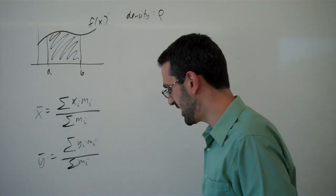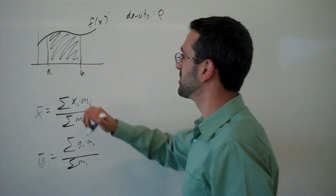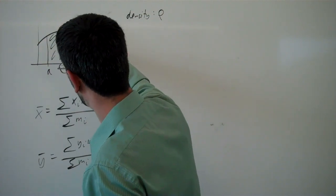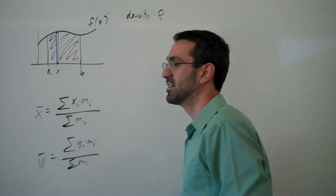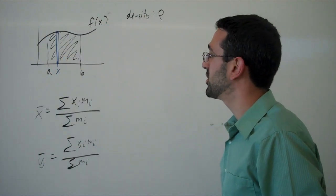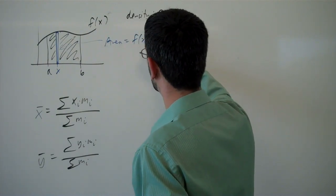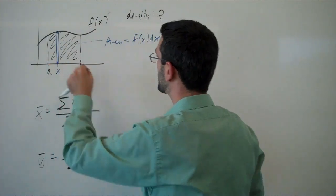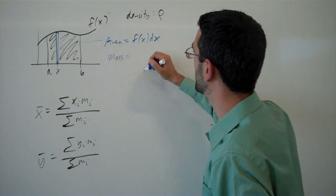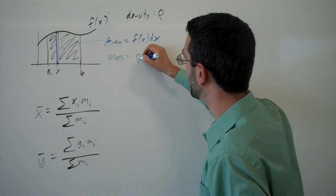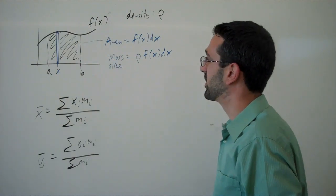But that's for point masses, and here we have a continuous function. So the way we're going to work with this is by imagining chopping this up into a bunch of little rectangles like that. So this rectangle then has an area of f of x dx, right? Height of f of x, the width of some tiny little change of x. Which means the mass of that slice will be the density times f of x dx. That's the mass of that one little slice.